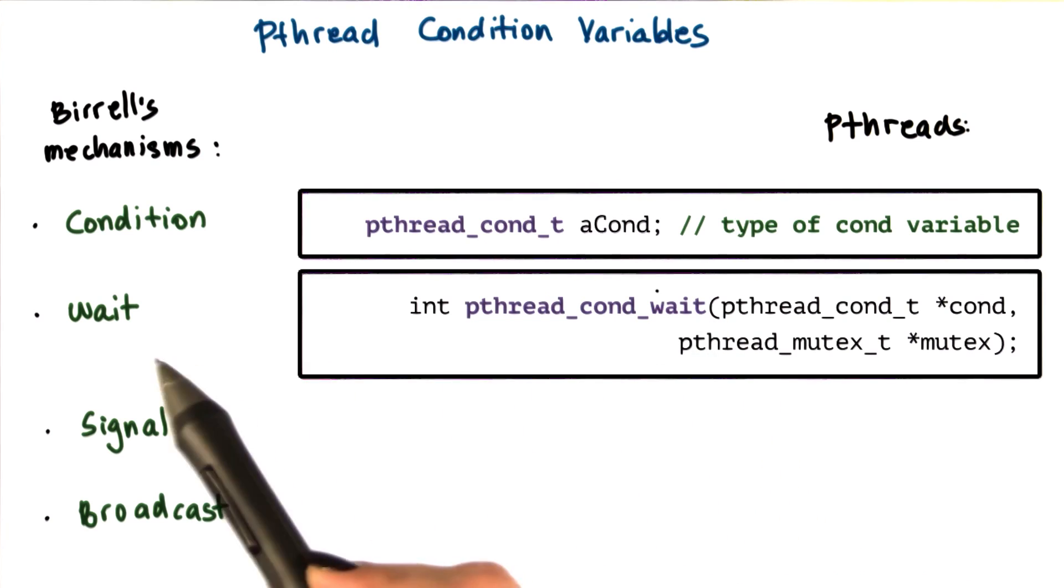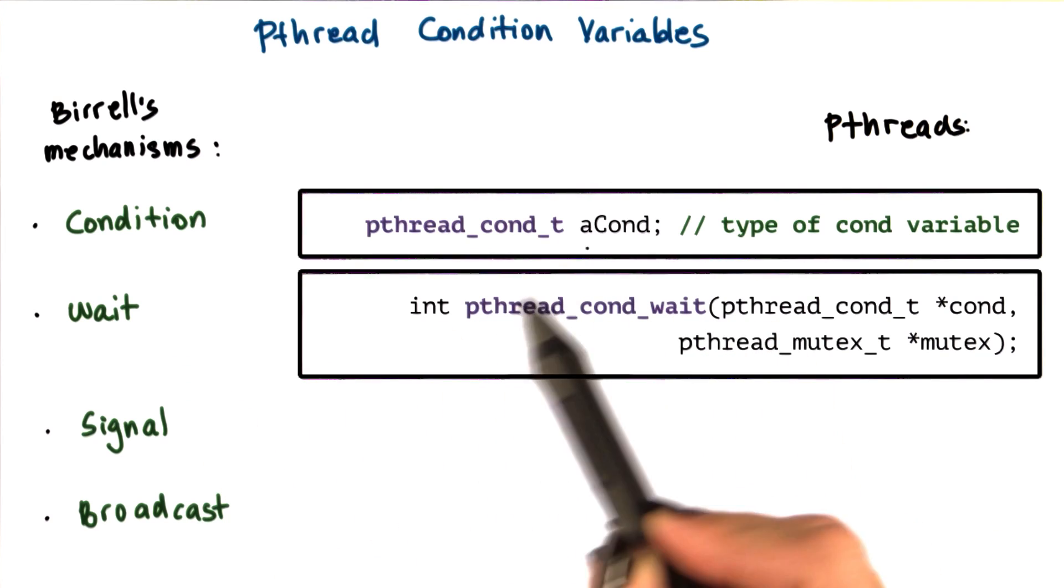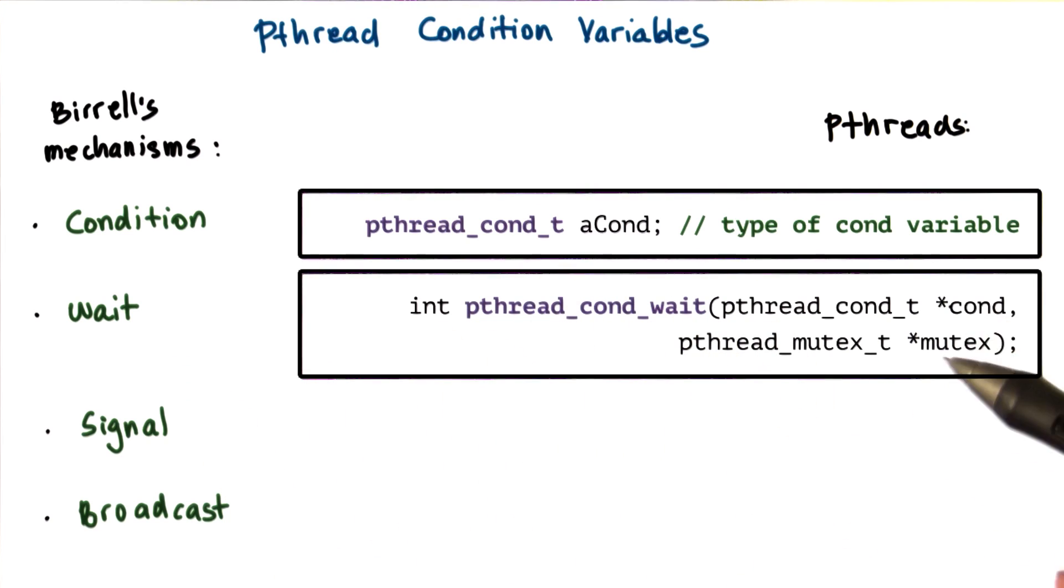For instance, for wait, pthread has pthread_cond_wait that takes two arguments: a condition variable and a mutex, just like what we saw in Beryl's wait.